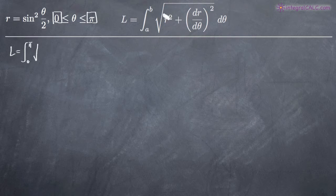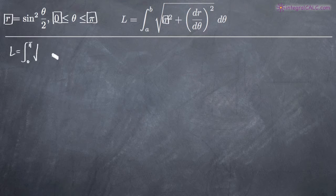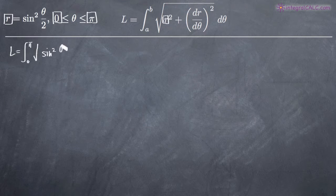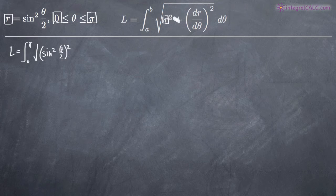Remember that r is our original function. If you're given something that's not equal to r, go ahead and solve it for r if you can. So we'll substitute r equals sine squared of theta over two into the formula — that term is going to be squared — and then we add dr over d theta squared.